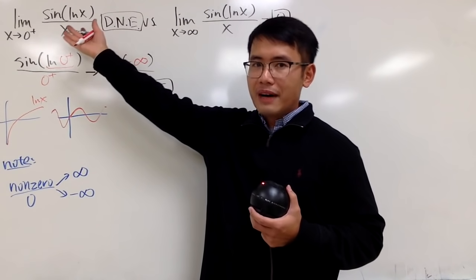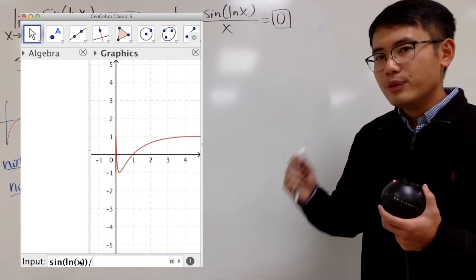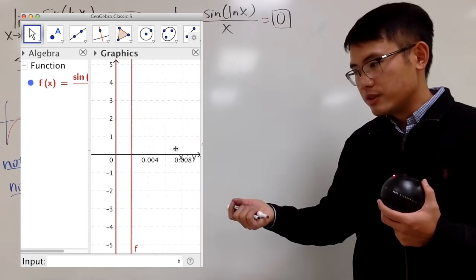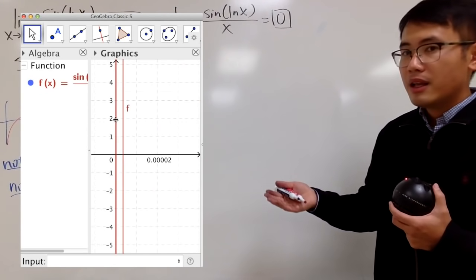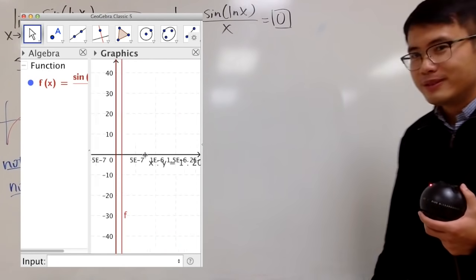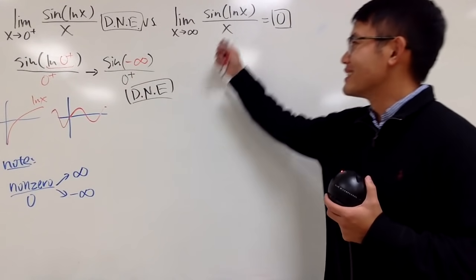And if you want to graph sin of ln x over x, the graph looks like this. And if you look at the graph approaching the y-axis, meaning x equal to 0 from the right-hand side, you can see that it's just chaos. Anyway, on the other hand, let's talk about this right here.